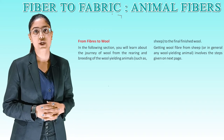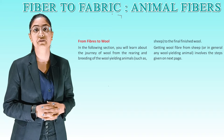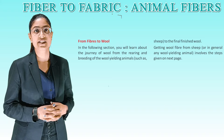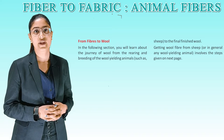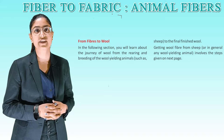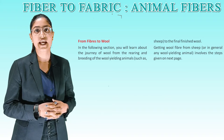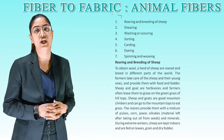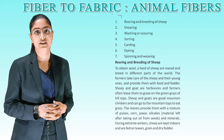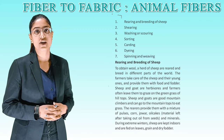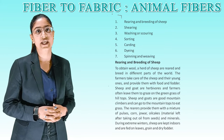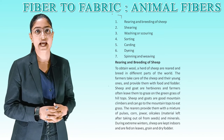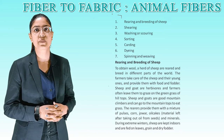In the following section, you will learn about the journey of wool from the rearing and breeding of wool-yielding animals such as sheep to the final finished wool. Getting wool fiber from sheep involves the following steps: first, rearing and breeding of sheep; second, shearing; third, washing or scouring; fourth, sorting; fifth, carding; sixth, dyeing; and last, spinning and weaving.